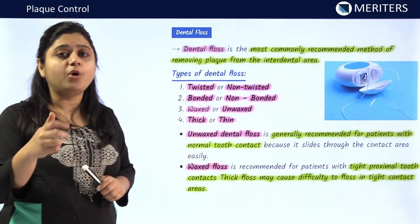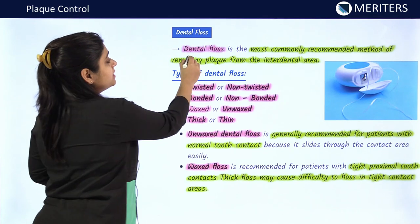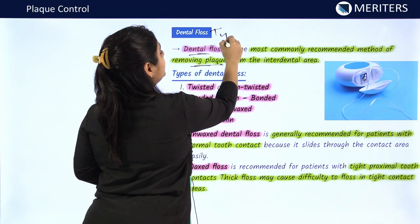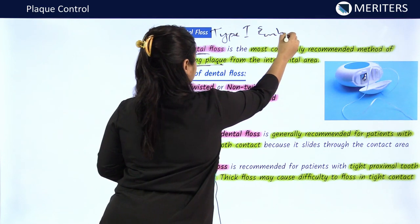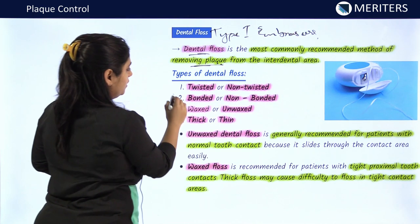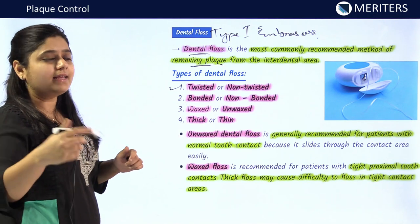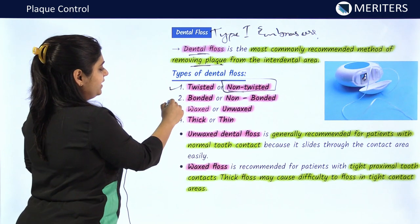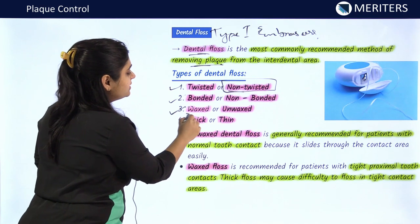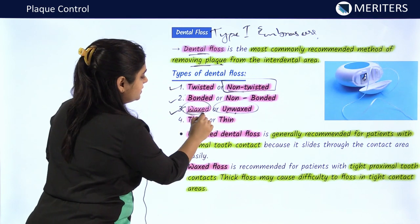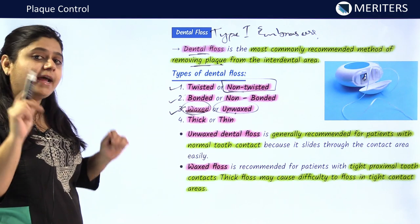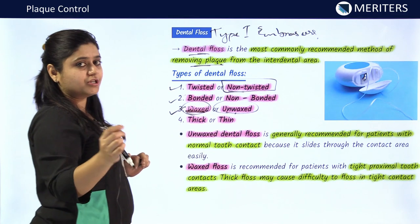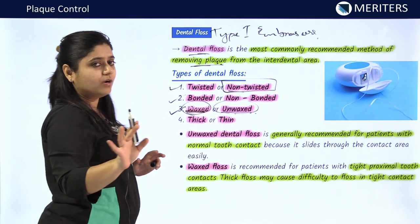Dental floss is the most commonly recommended method to remove plaque from interdental areas, mostly used in type 1 embrasures. Types of dental floss include twisted or non-twisted (braided or non-braided) — mostly non-braided types are preferred. They can also be bonded or non-bonded, waxed or unwaxed, and thick or thin. Waxed dental floss should be used where tight contacts are present; unwaxed dental floss is recommended for normal contact teeth. Thin floss is used in tight contacts and thick variety in normal contacts.